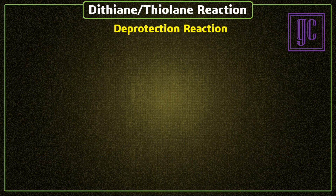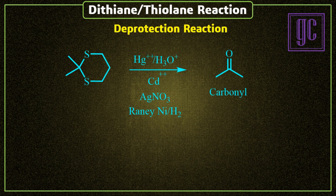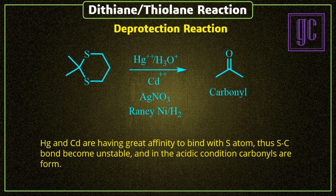Next is the de-protection reaction. De-protection is carried out in the presence of mercury(2+) or cadmium(2+) ions, or their salts. Also, silver nitrate and Raney nickel are also used for this purpose. Mercury or cadmium ions interact strongly with sulfur, and under acidic conditions, the dithianes get hydrolyzed, and the final product — the carbonyl — is formed.